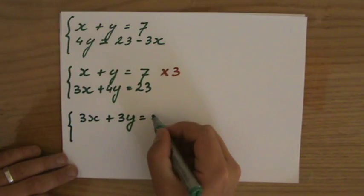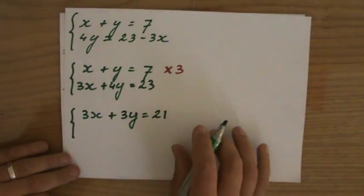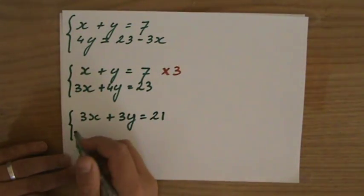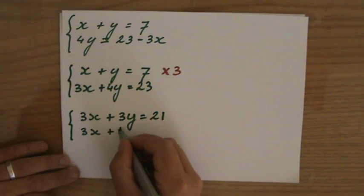Hang on a minute, seven times three, that is 21. Check my previous videos where I show that this is true, this is exactly the same as that. Okay, the second equation I can leave it as it is, 3x plus 4y equals 23.